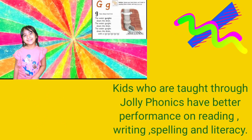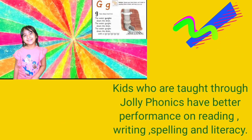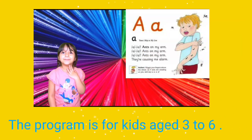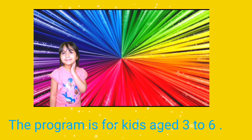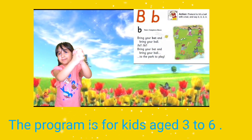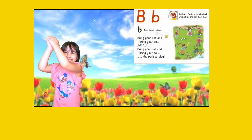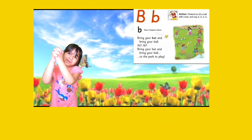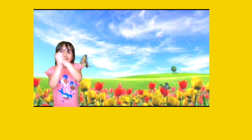Kids who are taught through Jolly Phonics have better performance on reading, spelling, and literacy compared to those taught conventionally or through analytic phonics. Jolly Phonics is for kids from ages 3 to 6, and it is a fun and child-centered approach used by many schools throughout the UK and other countries. Now we are going to learn what Jolly Phonics is and how it is taught.